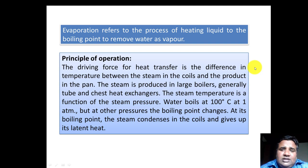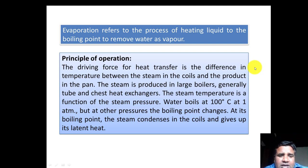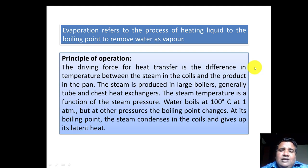The steam is produced in large boilers, generally tube and chest heat exchangers. The steam temperature is a function of steam pressure — if we increase the pressure then we can maintain high temperatures. Water boils at 100 degrees centigrade at one atmospheric pressure but at other pressures the boiling point changes. At its boiling point, the steam condenses in the coils and gives up its latent heat, transferring it to the product inside, and it condensates.